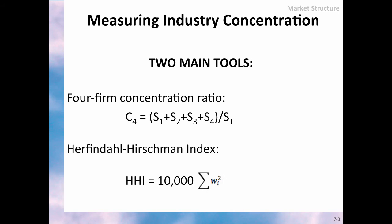Let's start with the concept of market or industry concentration by looking at two main tools. First is the four-firm concentration ratio, which measures how much of the total output in a given industry is produced by the largest four companies in the industry. The closer this ratio is to zero, the less concentrated the industry is. The closer the ratio is to one, the more concentrated the industry is.